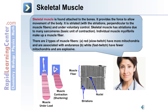Skeletal muscle is found attached to bones. It provides a force to allow movement of the body. It's striated, with the striations perpendicular to the muscle fibers, and it's under voluntary control. Skeletal muscle has striations due to the many sarcomeres, which are the basic unit of contraction. Individual muscle myofibrils make up a muscle fiber.